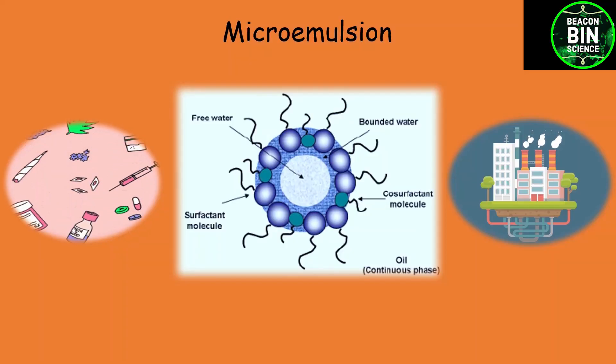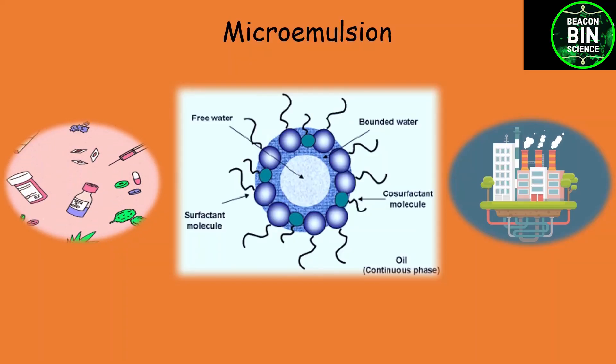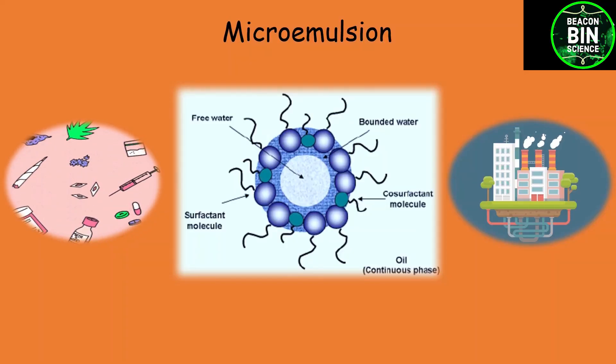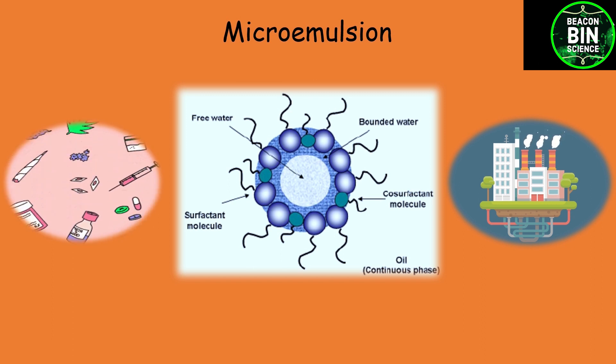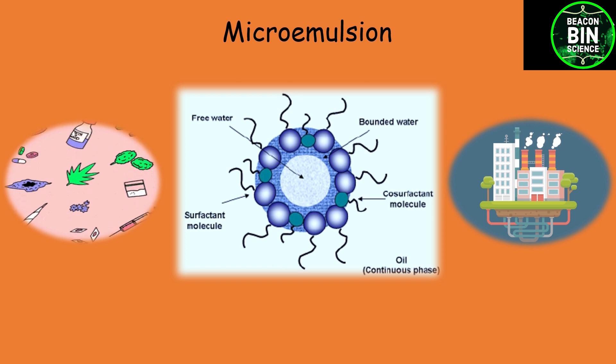Microemulsion is a sub-part of emulsion. They are of size roughly between 10 to 100 nanometers, that's why they are termed as nanoparticles. Microemulsions are nanometer-size particles and are most widely used in industries and biochemical fields for drug delivery. Now let's understand step by step what a microemulsion is and what are the factors affecting its formation.